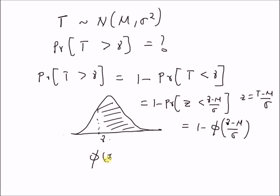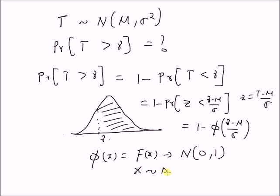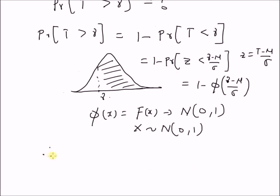Here phi is the CDF, that is the cumulative distribution function, for a standard normal random variable. This phi of x is the CDF corresponding to a standard normal variable that has mean 0 and variance 1. Therefore, the probability that t is greater than gamma is equal to 1 minus phi of gamma minus mu by sigma.